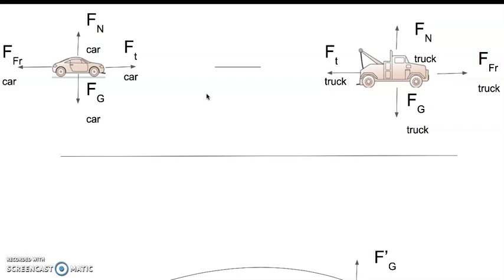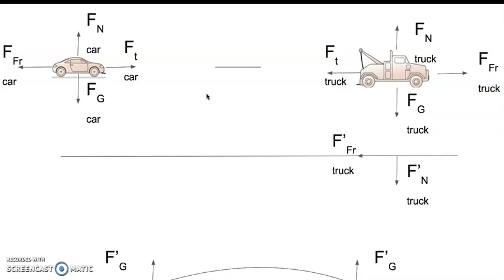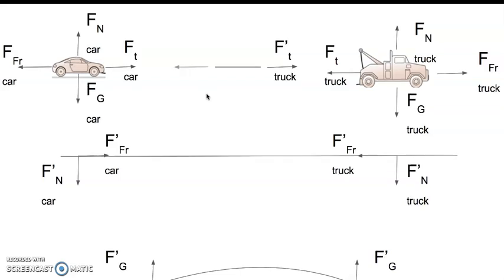We also have the Earth: since the car is being pulled down, the car is also pulling the Earth up. We have the surface: since the surface is pushing up on the truck, the truck is pushing down on the surface. We write the force pairs for the force of friction as well. And notice with the cable: if the cable is pulling the truck, the truck is also pulling the cable, and same thing for the car.